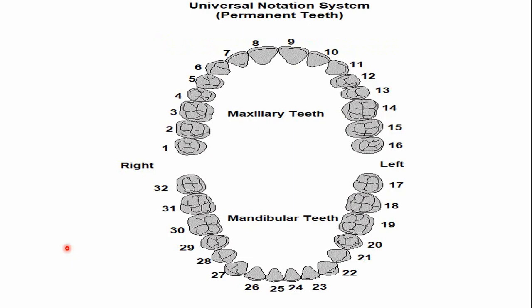Now, what is the number of this tooth in various tooth numbering systems? These are the second premolars — this is the second premolar of the left side and this is the second premolar of the right side. The left mandibular second premolar is number 20, and in a clockwise direction, the mandibular second premolar of the right side is number 29.